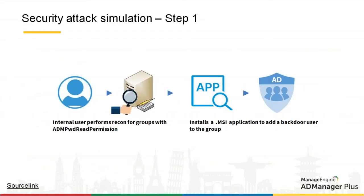So let's perform the attack. We will log in as an internal user and perform reconnaissance for groups with admin password read permission — groups and users that have read permission on the local administrator's account. Once we find those groups, the next step is to run an MSI application or Windows Installer application to add a backdoor user to the group.